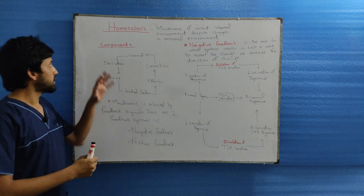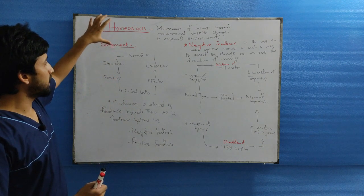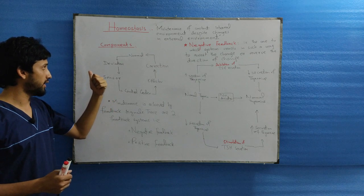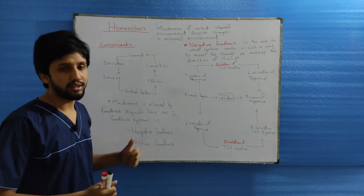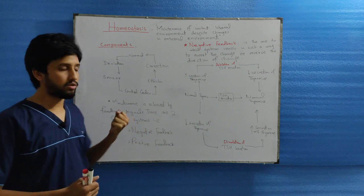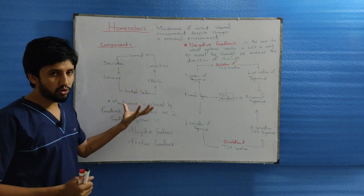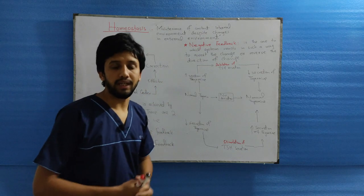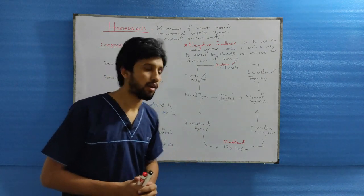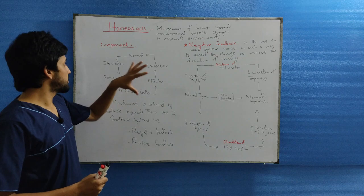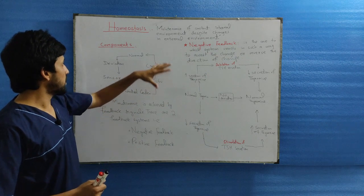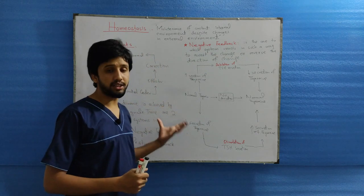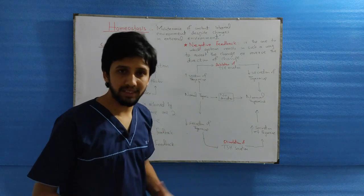What are the different components involved in maintaining homeostasis? When there are deviations, there are sensors which sense those deviations. There is a control center which forwards messages to the effector, and the effector then corrects the deviations, bringing the system back to the normal point.